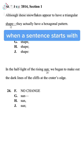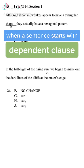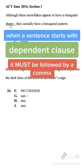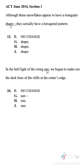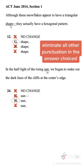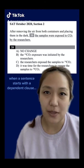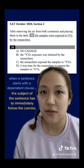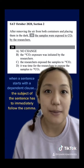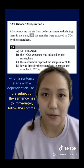When a sentence starts with a dependent clause — a sentence piece that cannot stand on its own — it must be followed by a comma. So eliminate all other punctuation in the answer choices. Also, the subject of the sentence has to immediately follow that comma.